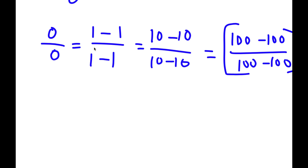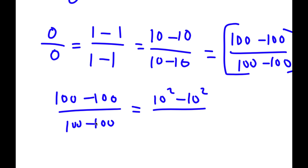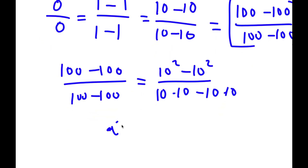So I have 100 minus 100 over 100 minus 100. Now 100 is the same thing as 10 squared. So this is 10 squared minus 10 squared over 10 squared minus 10 squared. However, if I have something in the form a squared minus b squared, this is equal to a plus b times a minus b.